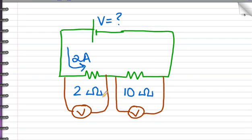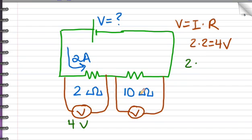First of all, find the voltage of each resistor. Voltage equals current times resistance. So this resistor's voltage is current 2 times resistance 2 equals 4 volts. This one's voltage is its current 2 times its resistance 10, 20 volts.